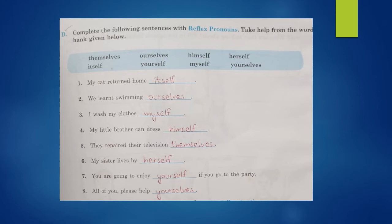Number four: My little brother can dress himself. Number five: They repaired their television themselves. Number six: My sister lives by herself. Number seven: You are going to enjoy yourself if you go to the party. Here 'you' is referring to one person, that is why 'yourself' is used. Number eight: All of you, please help yourselves. 'All of you' indicates that 'yourselves' will be used.